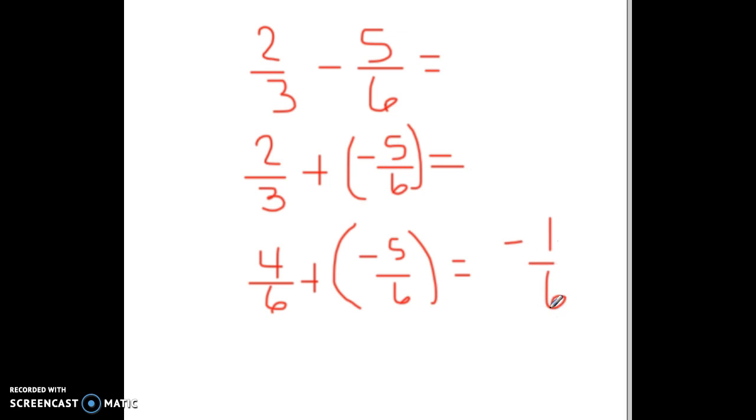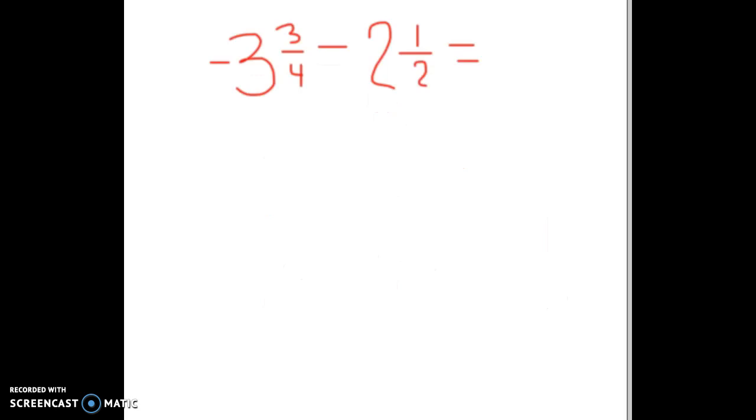So far we haven't had to simplify, and a lot of times that'll happen. When we see mixed numbers, a lot of times we get scared because that looks very intimidating. But all you have to do is change them to improper fractions. Four times three is 12, plus the three on top will be 15. And so that one is rewritten as 15-fourths, and don't forget your negative sign.